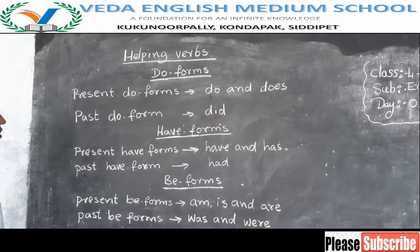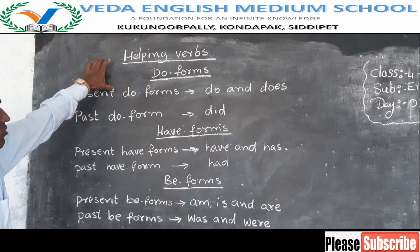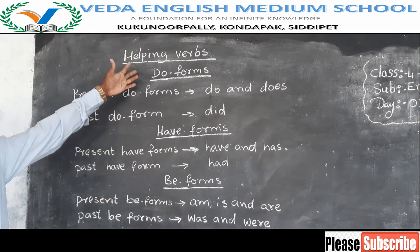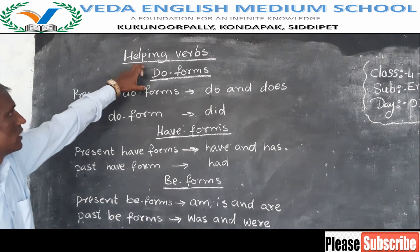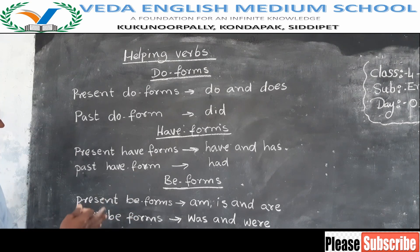That's why it is important to understand these helping verbs. Without understanding helping verbs, you can't make tenses. We have to understand all these helping verbs before learning the tenses — especially present tense, past tense, and future tense. Without that, you can't make any grammar or any sentences. That's why it is very important for you all to learn do forms, have forms, and be forms first, and then later we will understand how to use all these helping verbs in our grammar.